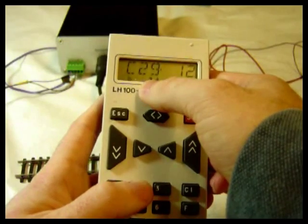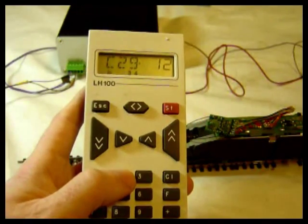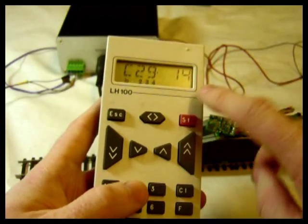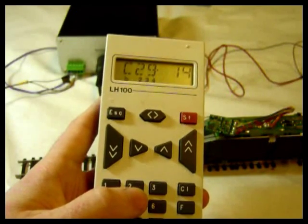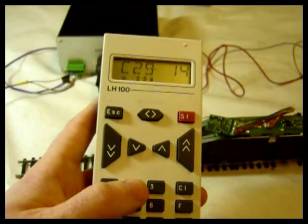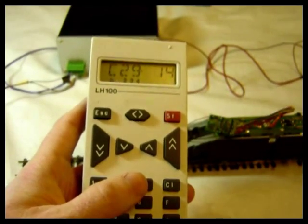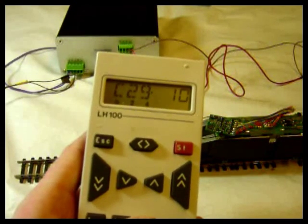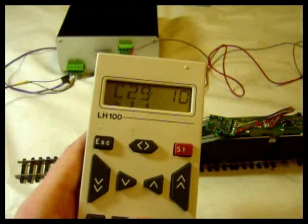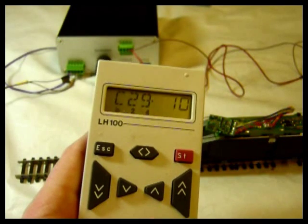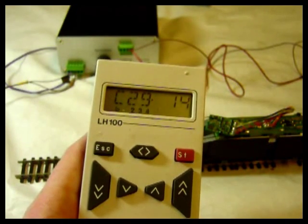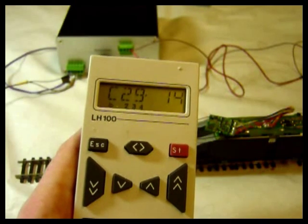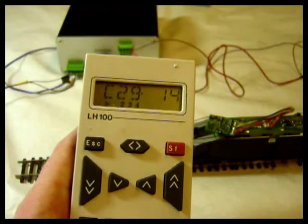The second bit, if I switch it off, it will put the loco onto 27 speed steps. If it's on, it will put it on 28 and 128 speed steps. The third bit here will choose between whether the loco runs only in digital operation, so when it's off. When it's on, it will work in digital and analogue operation. So it will automatically recognise what voltage has been applied to it.